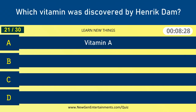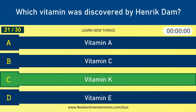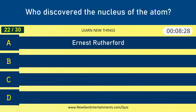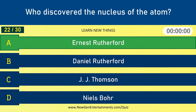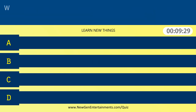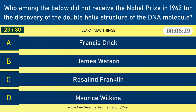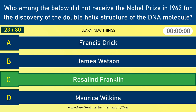Which vitamin was discovered by Henrik Dam? Vitamin K. Who discovered the nucleus of the atom? Who won the Nobel Prize in 1962 for the discovery of the double helix structure of the DNA molecule? Rosalind Franklin.